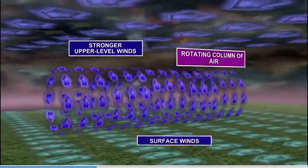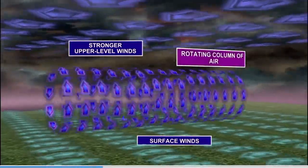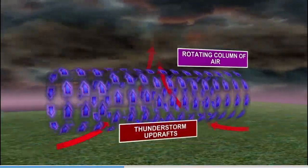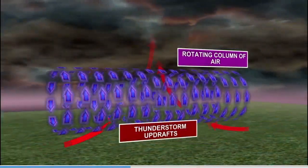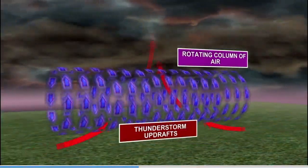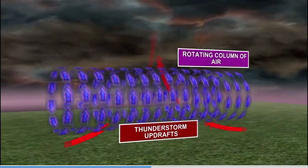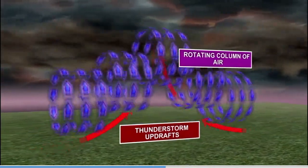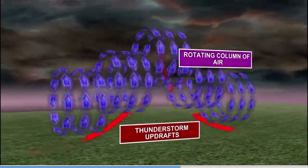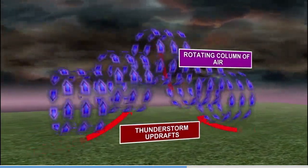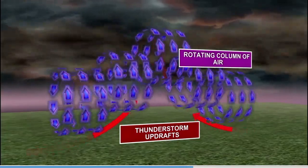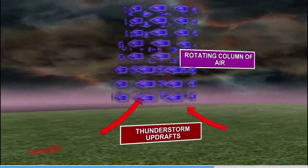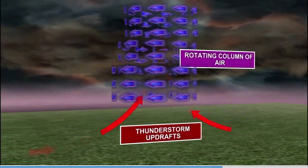Wind shear is winds moving with different direction with height. If this happens you can get a horizontal axis of moving wind. But if you have enough moisture and a thunderstorm updraft, you can take that horizontal column of air and tilt it upwards in the vertical.